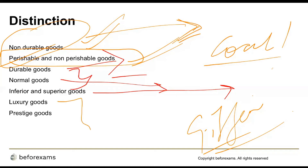Luxury goods are very important in economics. These are goods for which demand increases more than proportionally as income rises, so the elasticity of demand is high. Their quality, durability, and performance are remarkably superior. Like gold ornaments — the major substitute being diamond — they have high durability and need strong brand power. With time, luxury goods can assume the status of normal goods.